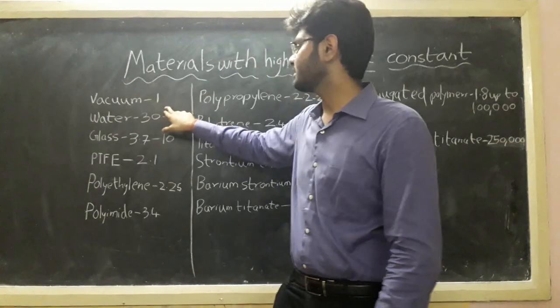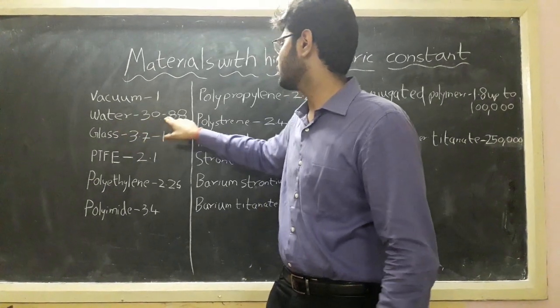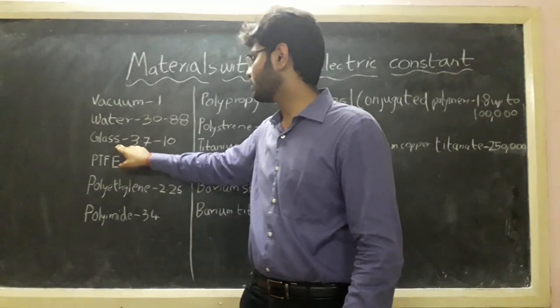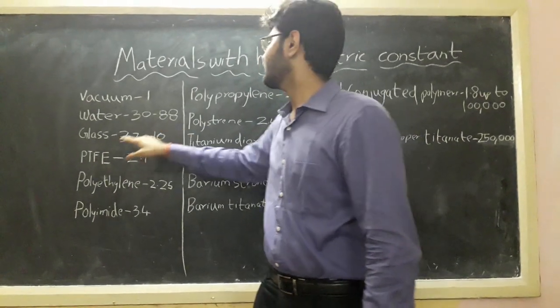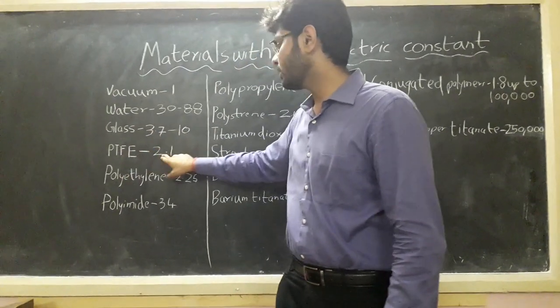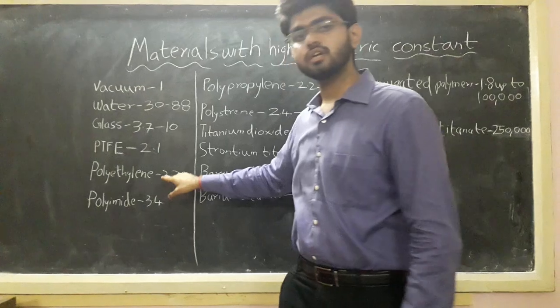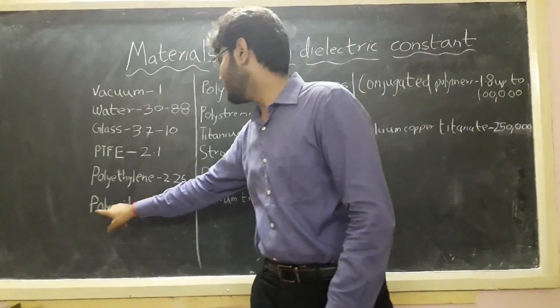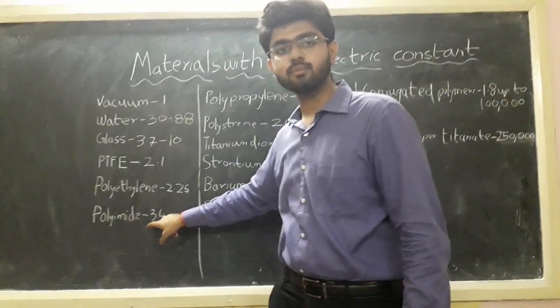Vacuum has dielectric constant 1. Water has dielectric constant 20 to 80. Glass has dielectric constant 3.7 to 10. PTFE has dielectric constant 2.1. Polyethylene has dielectric constant 2.25. Polyamide has dielectric constant 3.4.